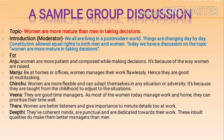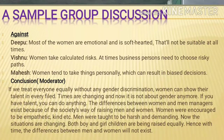Please go through the sample given in this video class. The topic is 'Women are more mature than men in taking decisions.' An introduction is given, followed by statements from Anju, Manju, Chinju, Veena, Tara, and Deepti — who support the statement — and Deebhu, Vishnu, and Mahesh — who are against the topic. A conclusion is also given at the end. Please go through it and don't forget to do the assignment at the end of this video lecture.